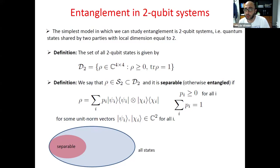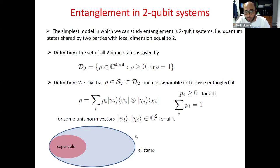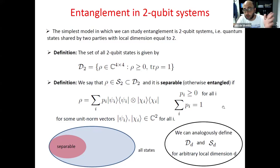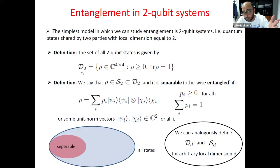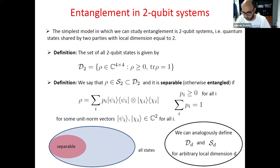A two-qubit density matrix is separable — otherwise entangled — if it can be written as a convex combination of pure product states. The set of all two-qubit density matrices is a convex set, and the set of separable density matrices is also a convex set which is a subset of all states. Throughout this talk I will mainly deal with two-qubit states, but sometimes I will present certain notions at a more general level, using D_d for the set of density matrices and S_d for separable states when the local dimension is d.